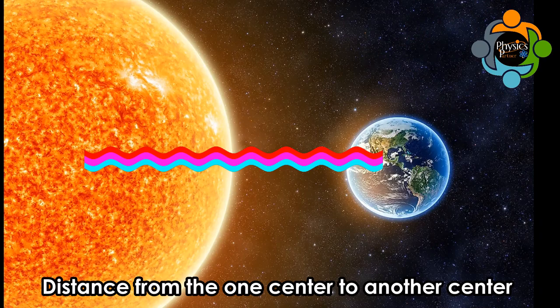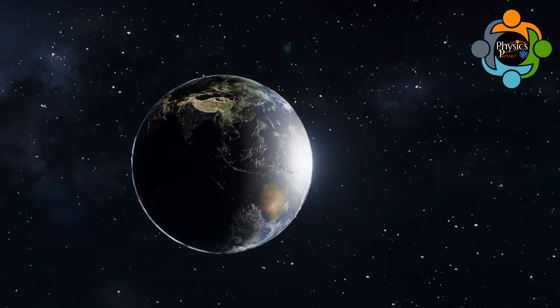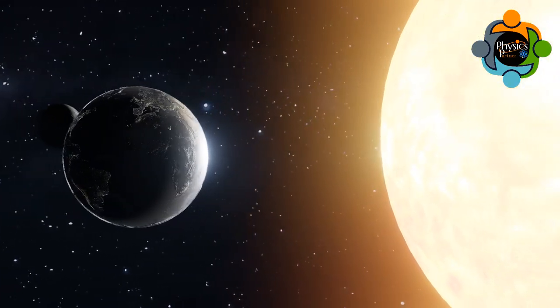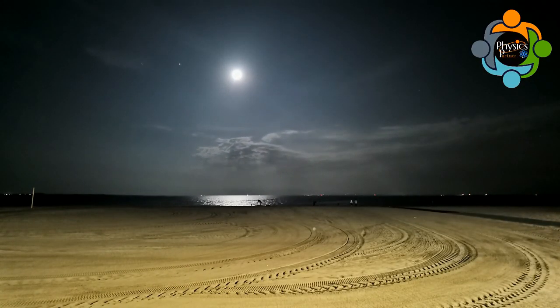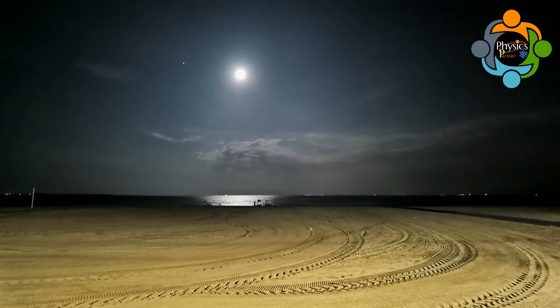The moon does not produce its own light. We can only see the moon because it reflects sunlight. The amount of reflected sunlight that reaches the Earth is determined by the relative positions of the Earth, Moon, and Sun, and determines the phases of the moon.